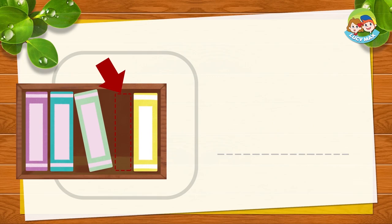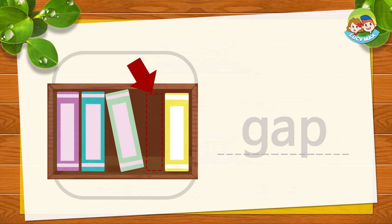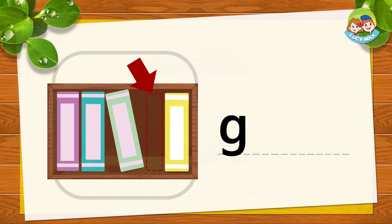The next picture is a gap. Can you see the arrow? The arrow points between two books — that is a gap. G-AP together is gap. Now you try.